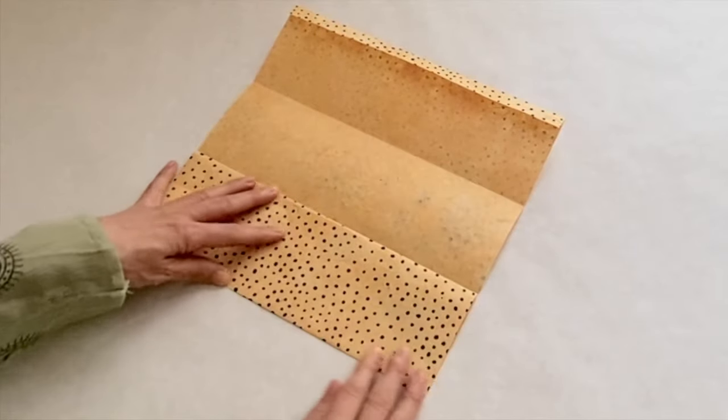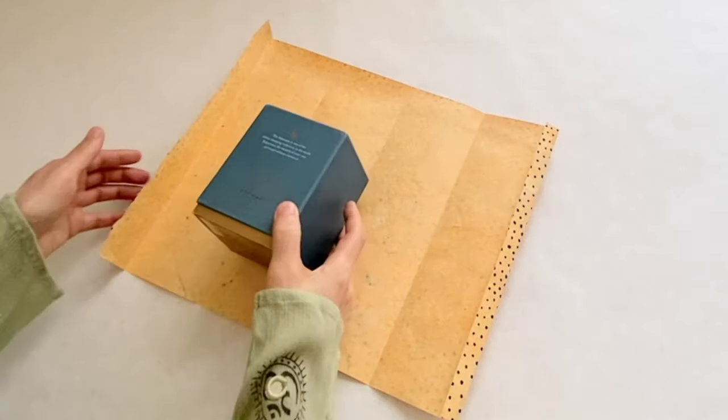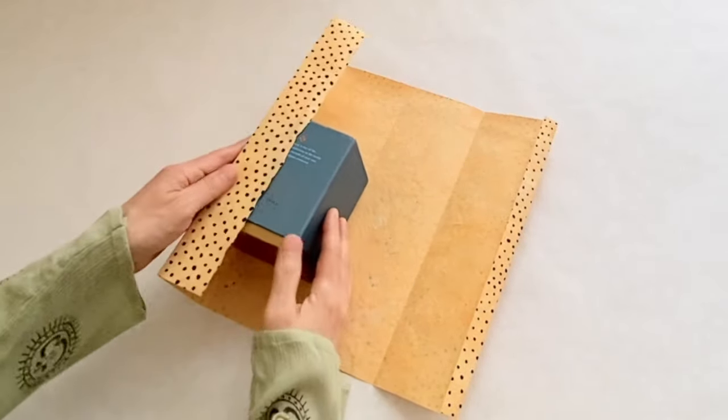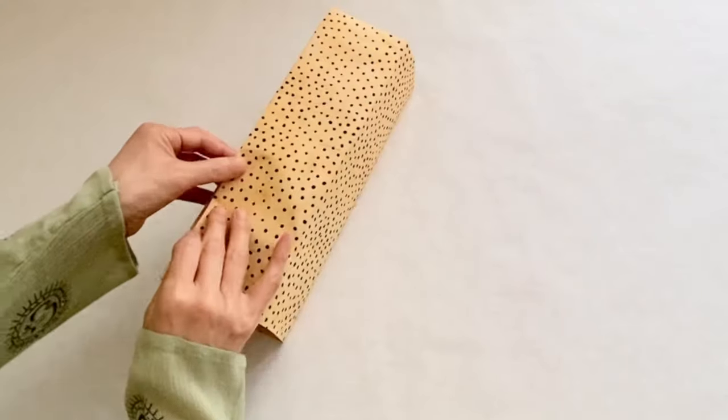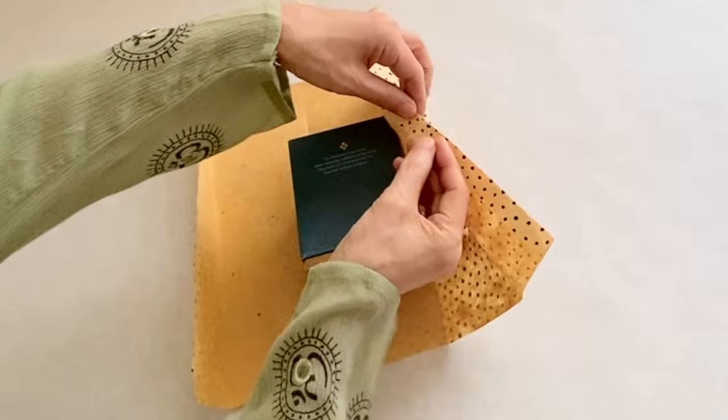After making four creases, place the box face down, then close it at the back of the box. Put double-sided tape and close it tightly.